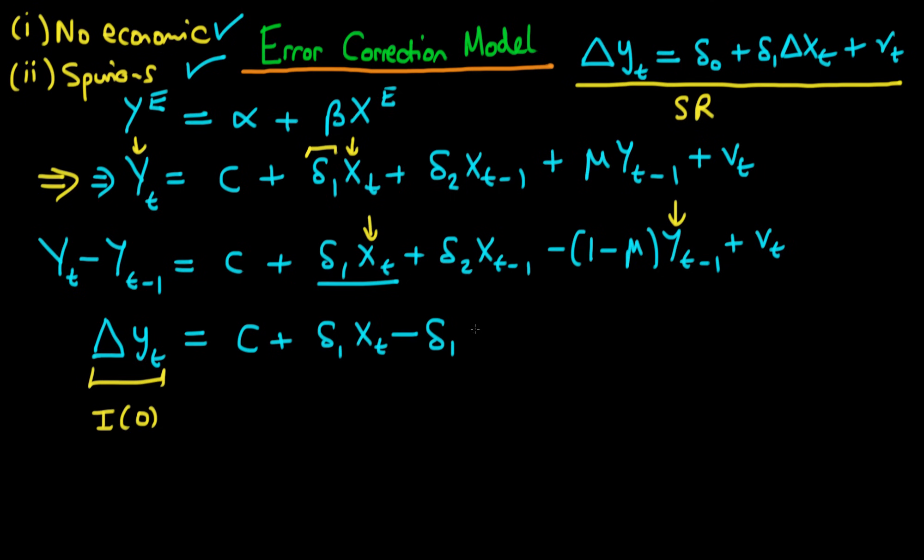But I can't just do that arbitrarily, I have to add in here delta 1 times xt minus 1 and then I've still got my delta 2 times xt minus 1 minus 1 minus mu times yt minus 1 plus vt.